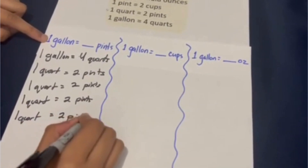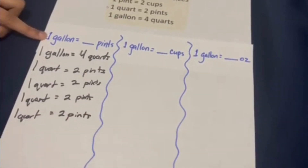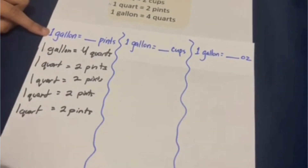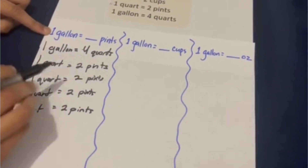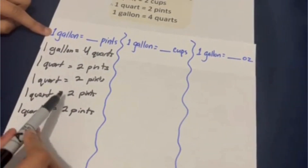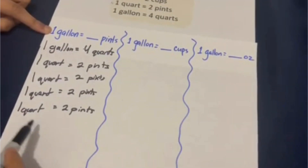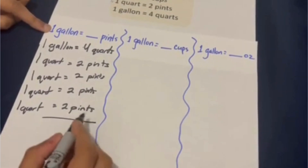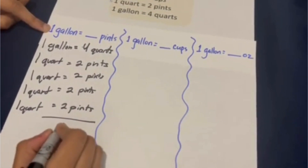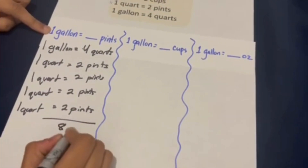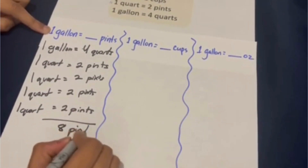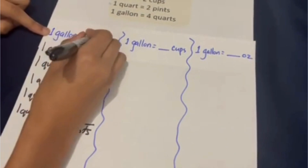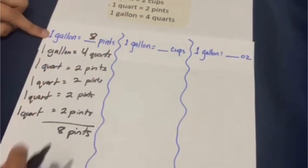To figure out how many pints are in a gallon, since there are four quarts in a gallon: two plus two plus two plus two, or two times four, is eight pints. Meaning that there are eight pints in one gallon.